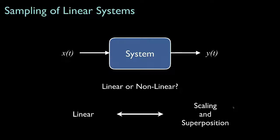Scaling means that if we double the input, we double the output, or if we halve the input, we halve the output. Superposition means that if the input is the superposition of two or more signals, then the output will be the superposition of their individual outputs. Any system that has the scaling and superposition properties is linear, and any system that is linear will have these properties.